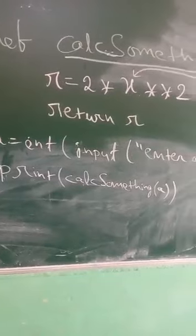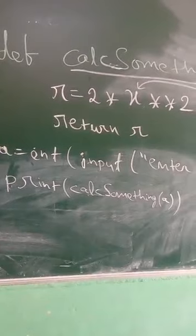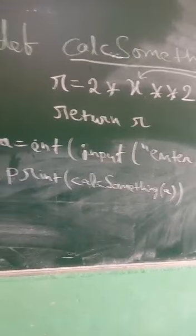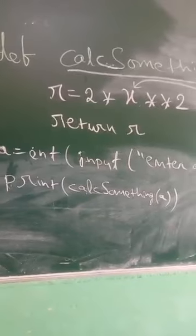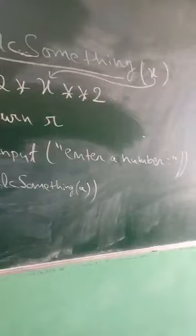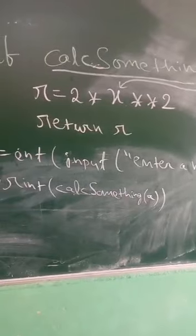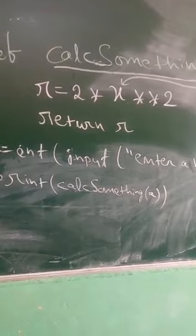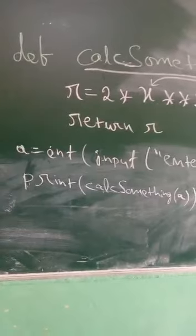In this print line we are doing two things. In the earlier line also we are doing two things — we are taking the value and converting it to int. In this print line, we are passing the value of A, what we have just taken, to the calc_something function. The value of A will go to x, and calc_something will act accordingly and return r — the value calculated from x. So, it will print that value which is returned by calc_something.